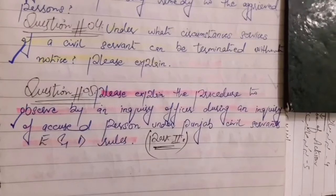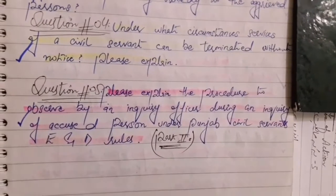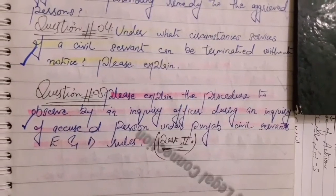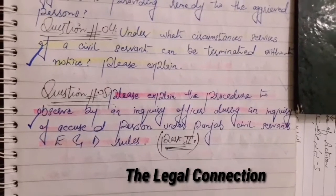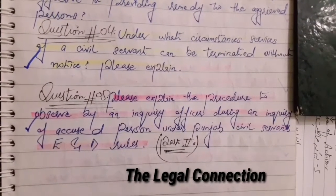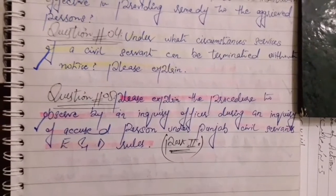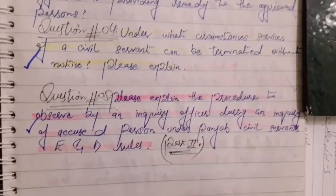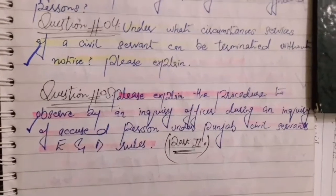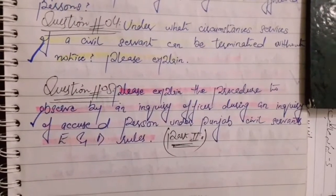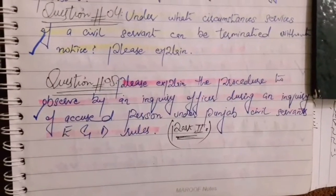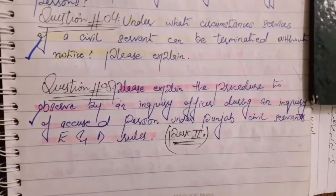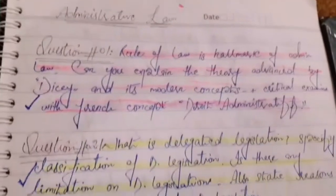Question number five: Please explain the procedure to be observed by an inquiry officer during an inquiry of an accused person. The procedure must be written as followed by an inquiry officer under the Punjab Civil Servants Act and Rules. This is our first part of administrative law.